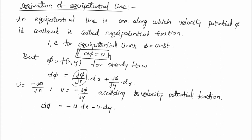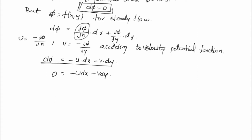For equipotential lines, d phi should be zero. So: 0 = -u dx - v dy. Taking minus as common: u dx + v dy = 0, therefore u dx = -v dy.